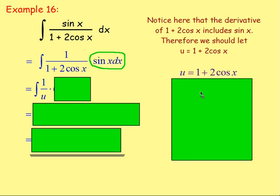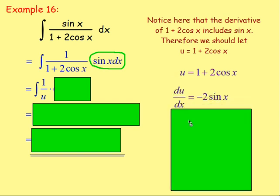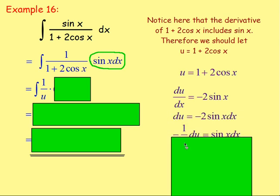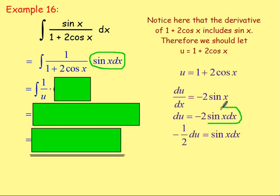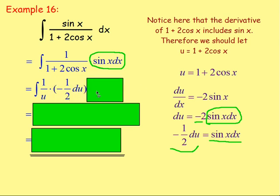We still have sin x dx and need to find what that equals — so we differentiate u. u equals 1 plus 2 cos x. Differentiating: du/dx equals negative 2 sin x (the 1 disappears, 2 cos x becomes negative 2 sin x). Multiply both sides by dx: du equals negative 2 sin x dx. We want sin x dx, so divide both sides by negative 2. Therefore sin x dx equals negative one half du. We can replace the sin x dx with negative one half du.